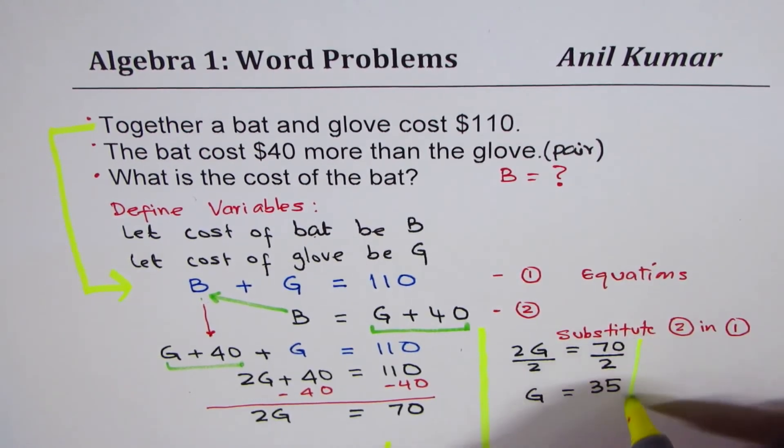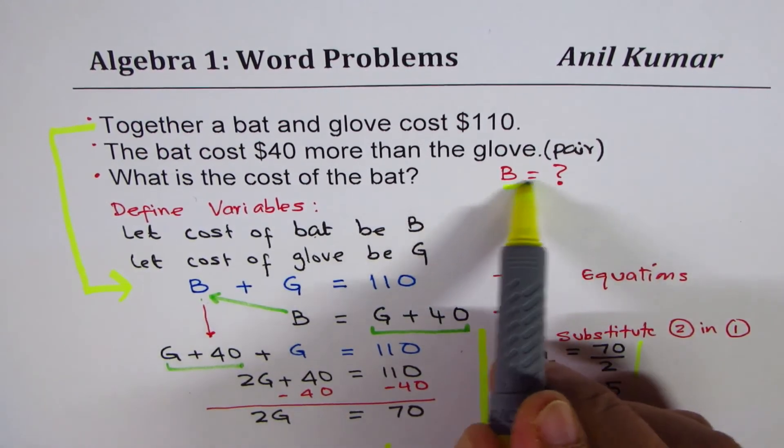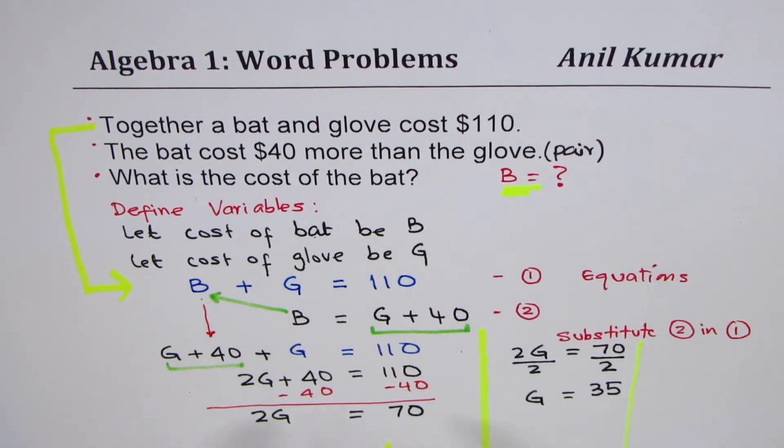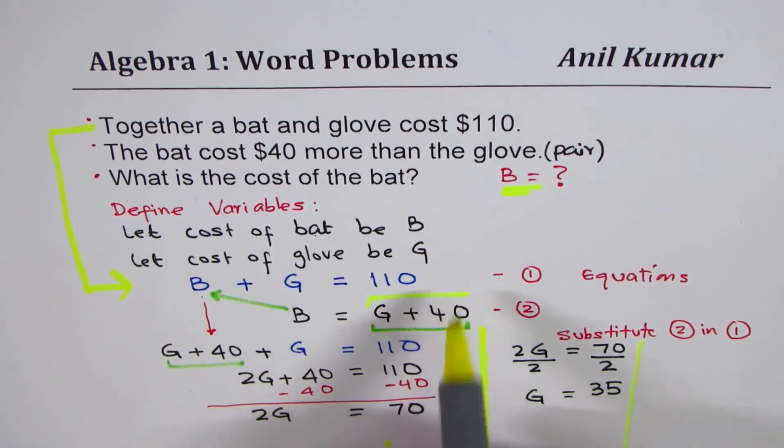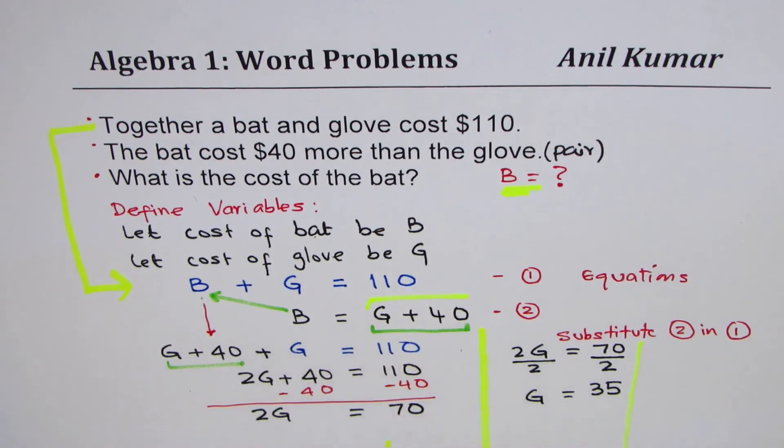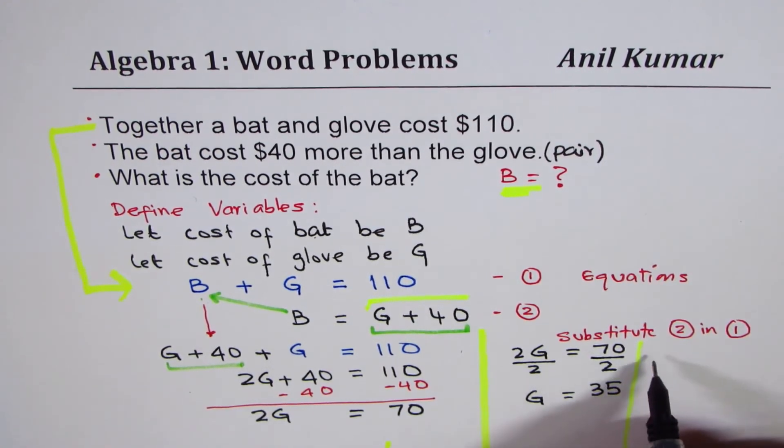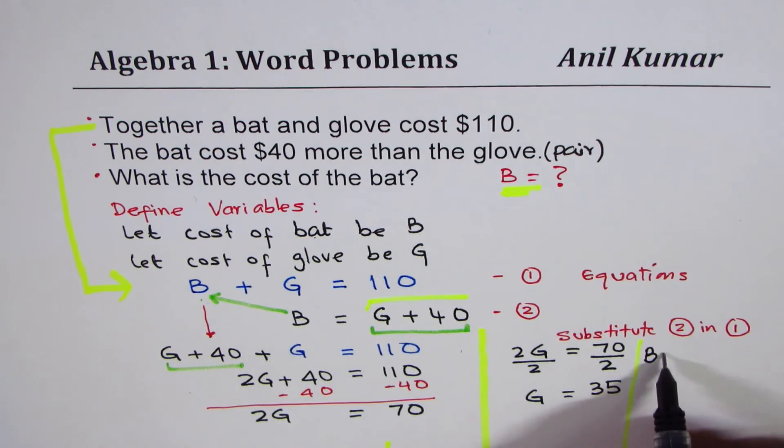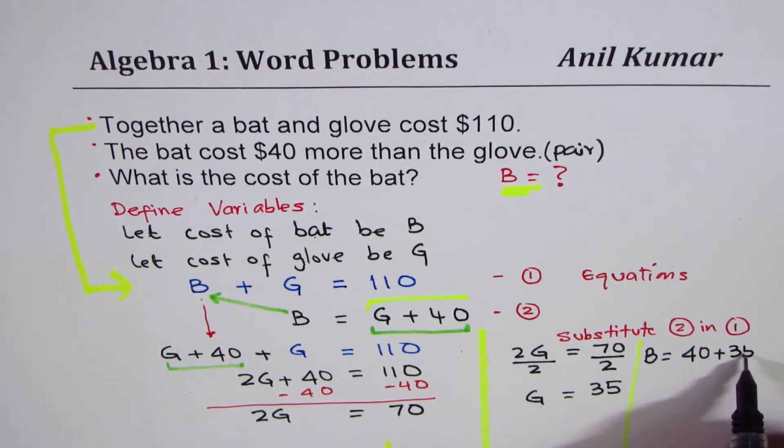So, we got the cost of the glove. We have to really find the cost of the bat. And what is the cost of the bat? Cost of the bat is 40 more than that of the gloves. So, we can now write cost of the bat is 40 plus 35. 40 plus 35 gives us 75.